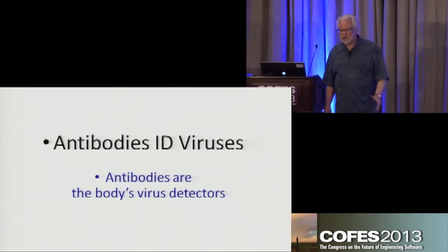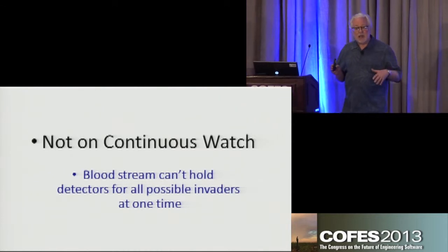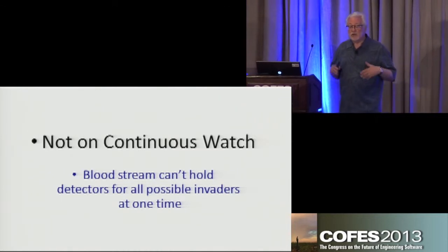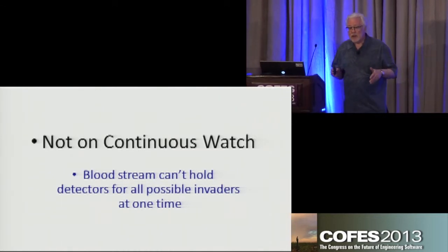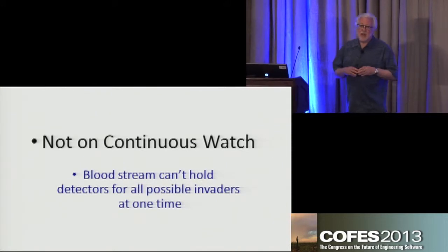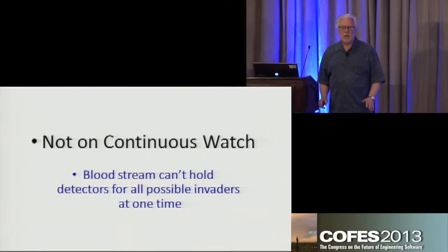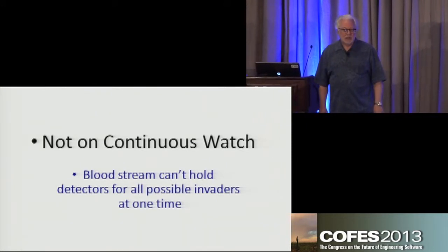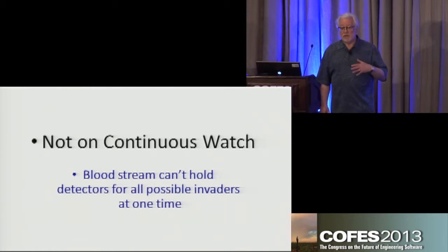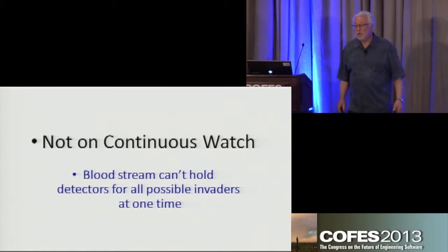What's interesting is there are so many different types of invaders that could come into the body, there is no way that the immune system can provide a detector for every possible one at all times. So it's got to figure out how to deal with this issue of not being able to field all the detectors it might need.